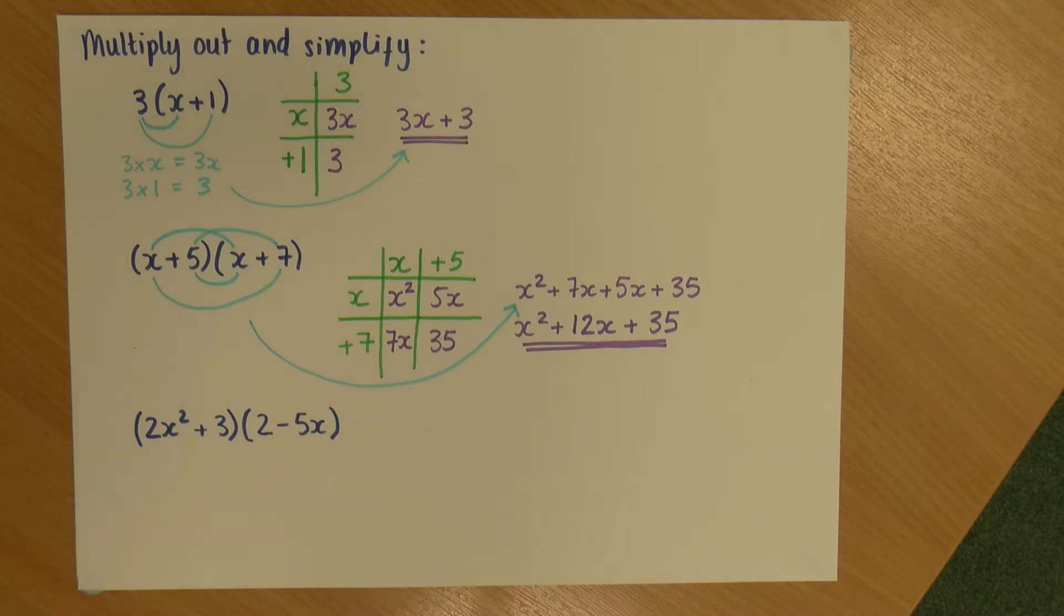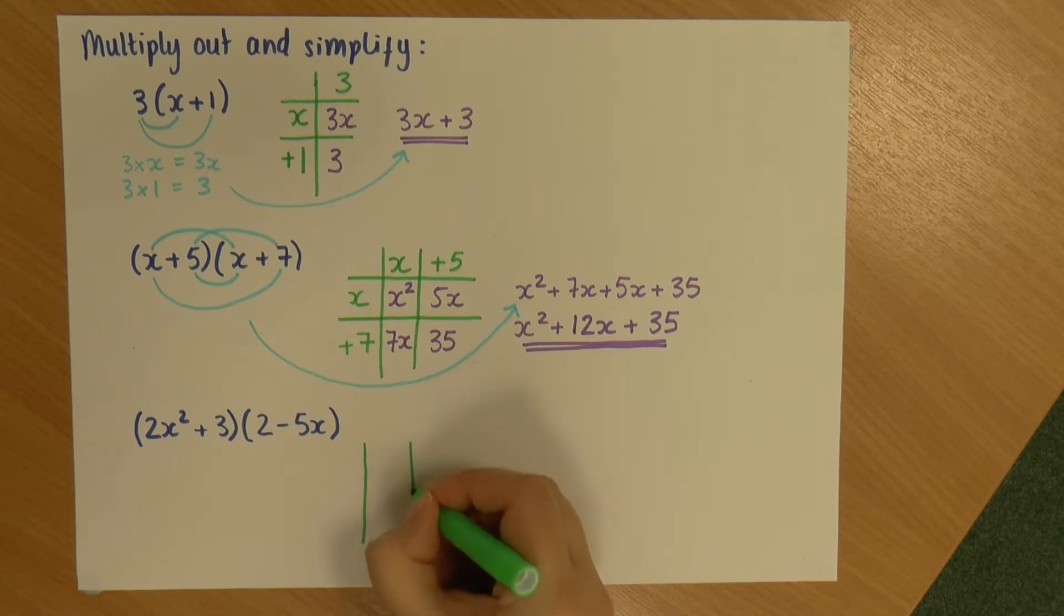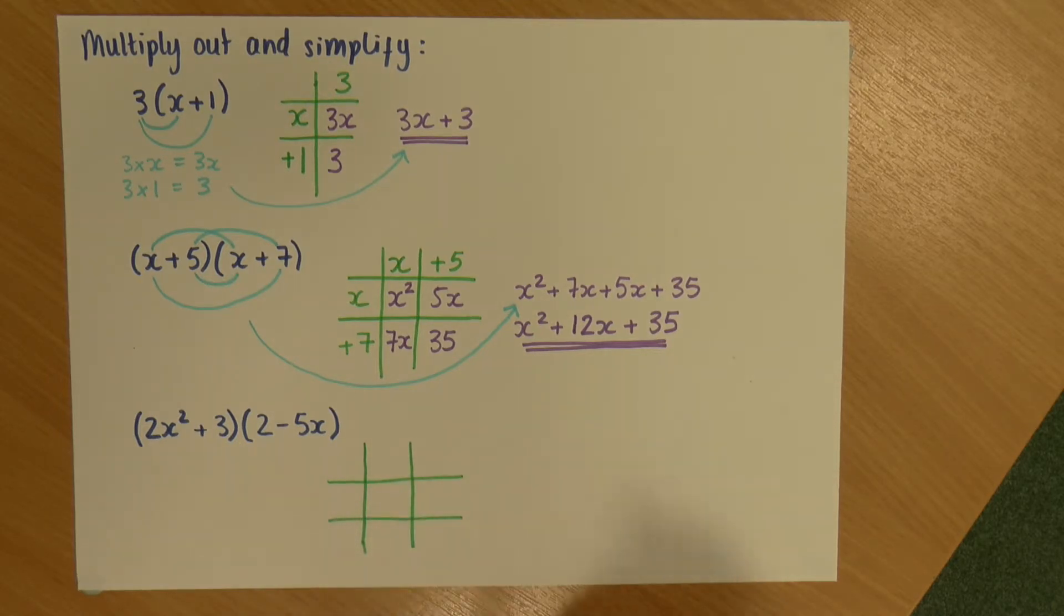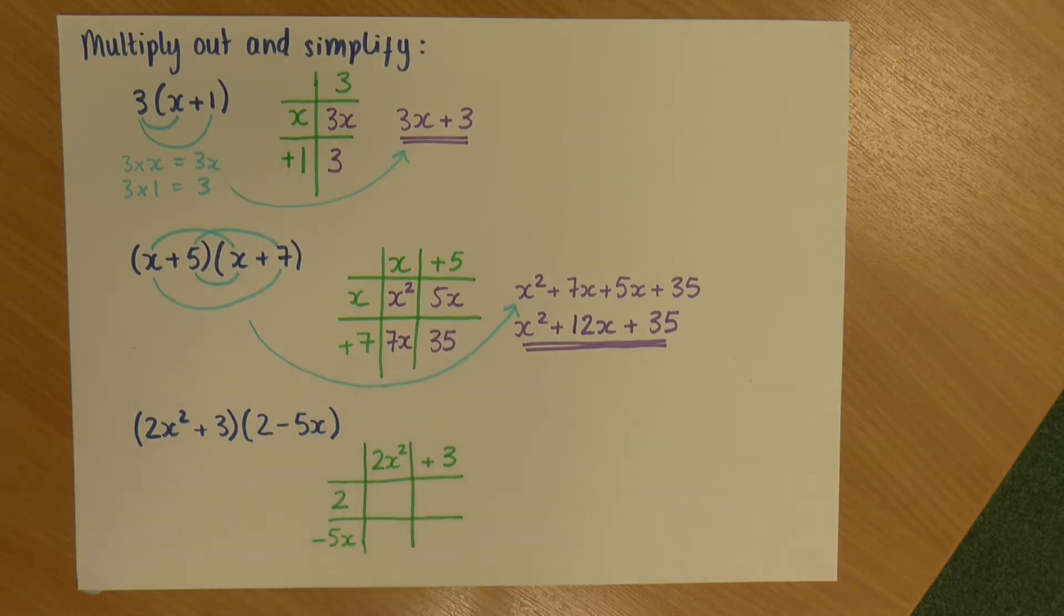Okay. Now, we've got one more down here at the bottom. So, I'm going to do, again, the box method. So, along the top, I'm going to put my... Well, I'm going to draw my boxes first, actually. There we go. So, it's kind of like a tic-tac-toe, noughts and crosses grid. So, my 2x squared plus 3. And my 2 minus 5x there. There we go. So, again, I'm filling in these two things multiplied. So, what's above and what's next to it.